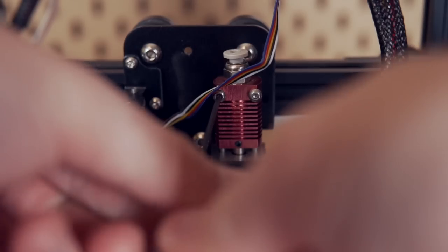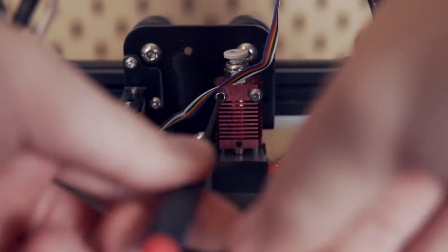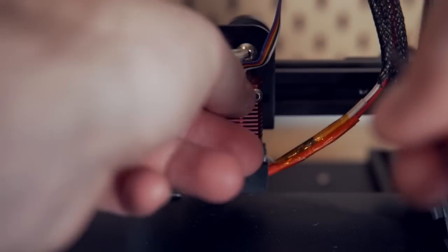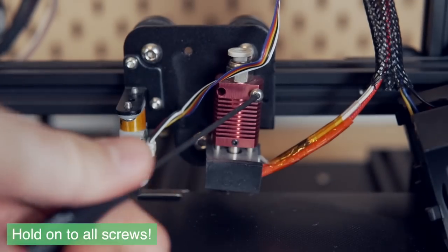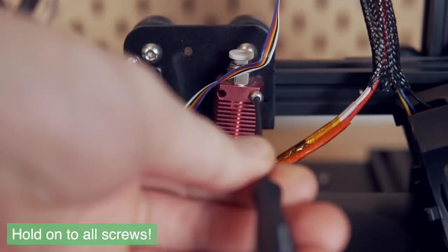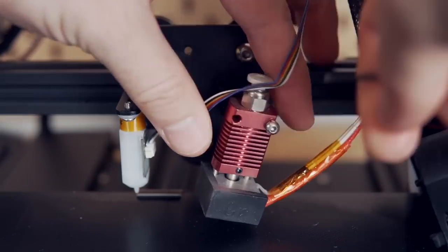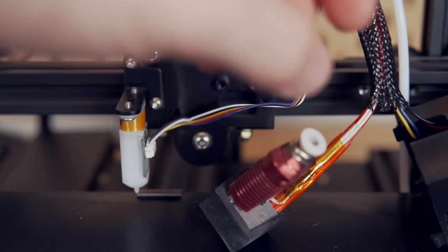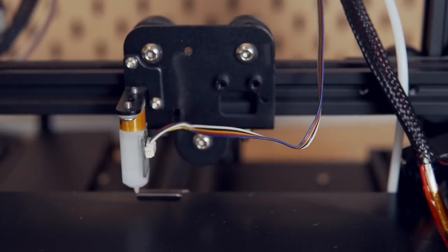Now it's time to remove the old hotend. It will be held in with two screws and we'll be reusing both of these screws in just a moment to install the Dragonfly BMS, so make sure you don't lose them. With the original hotend I just went ahead and placed it off to the side right now and I'll deal with the wires in just a moment.